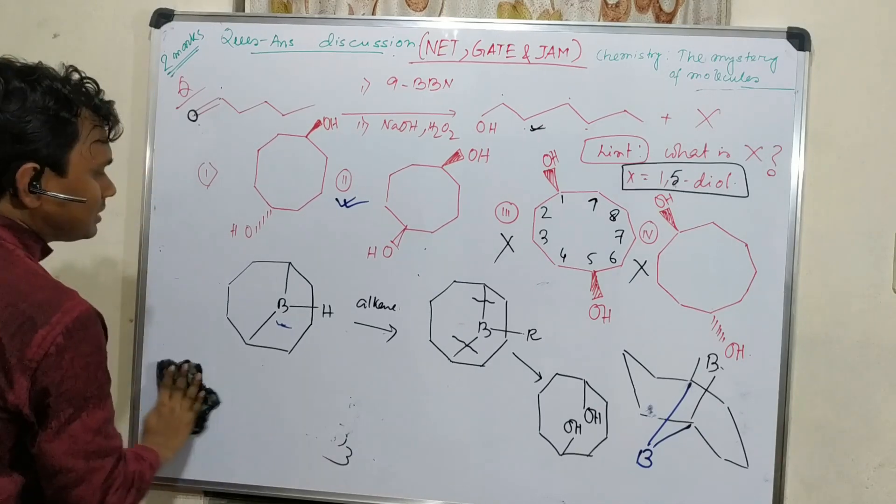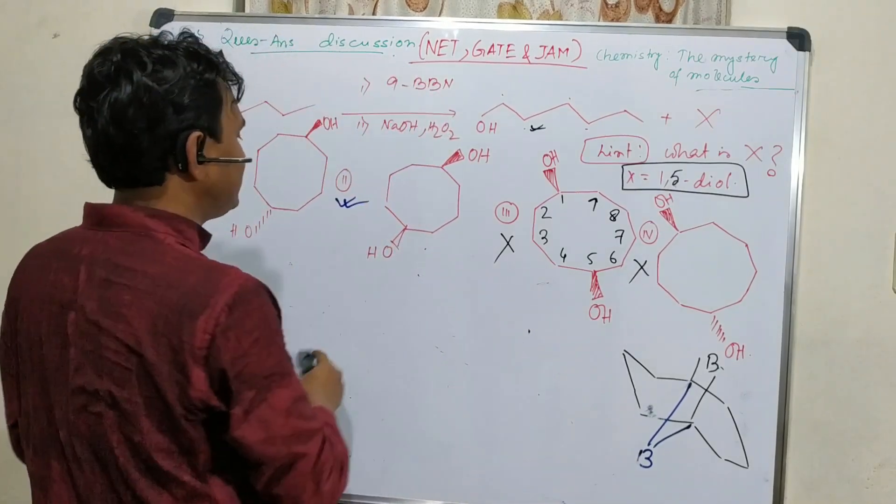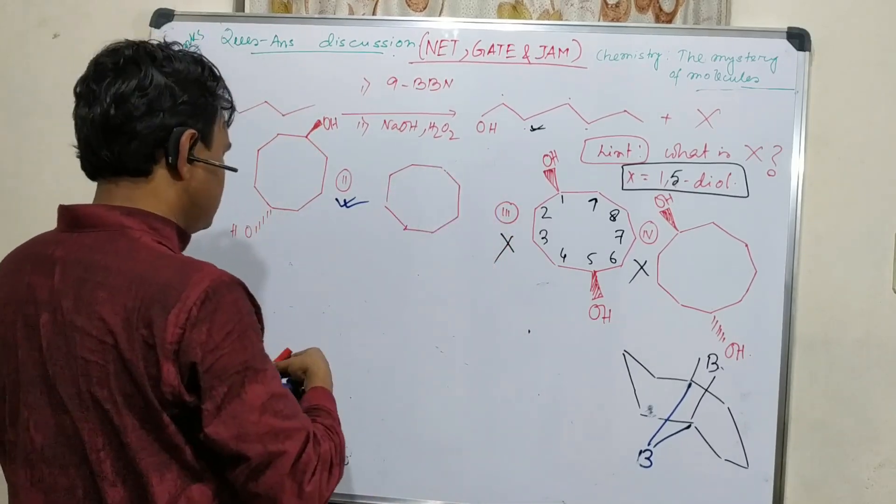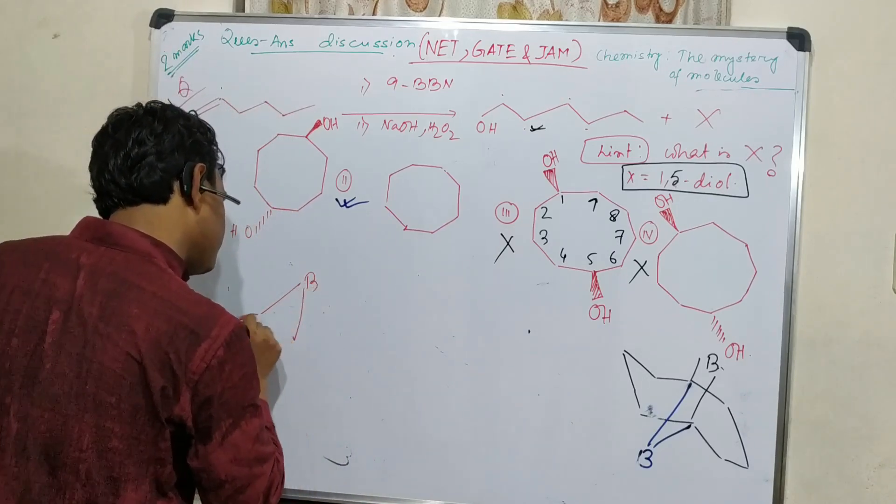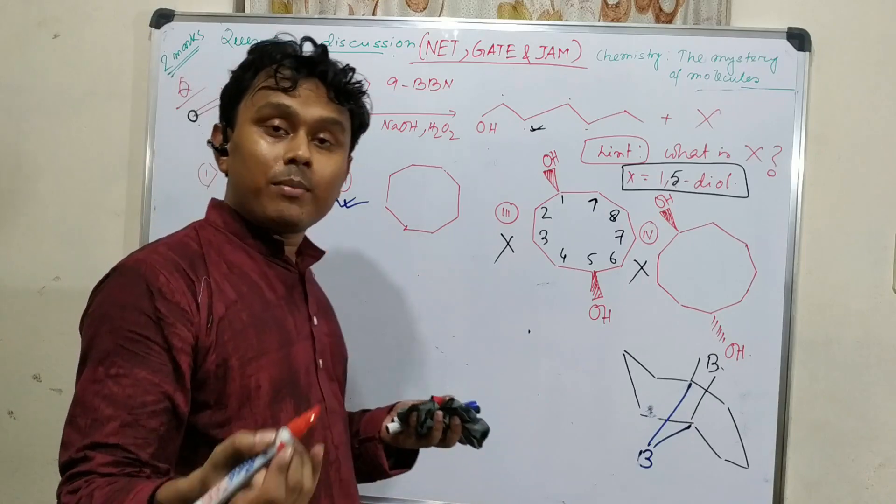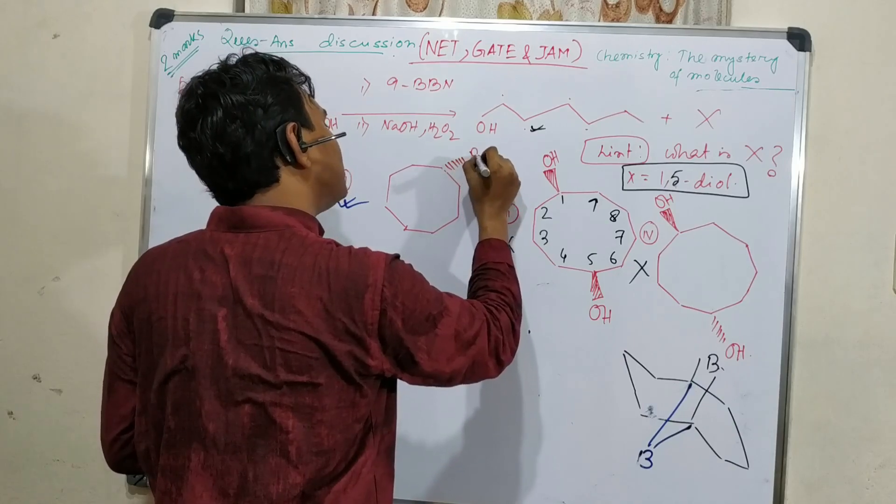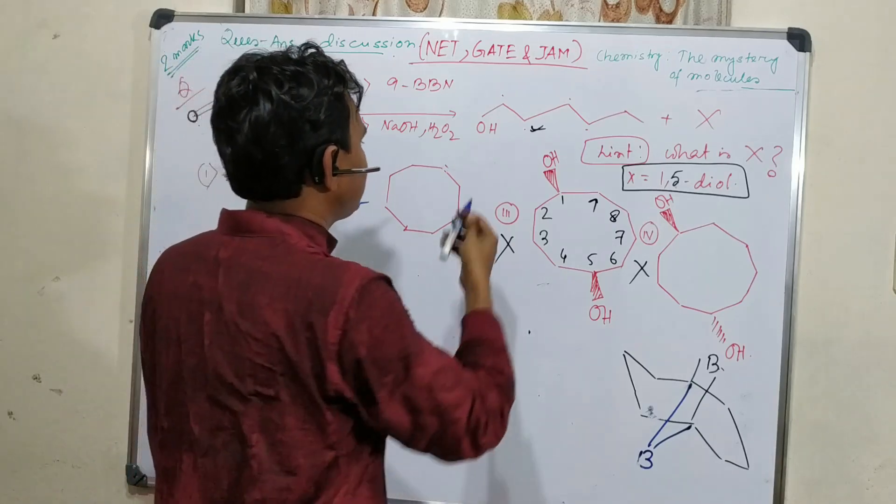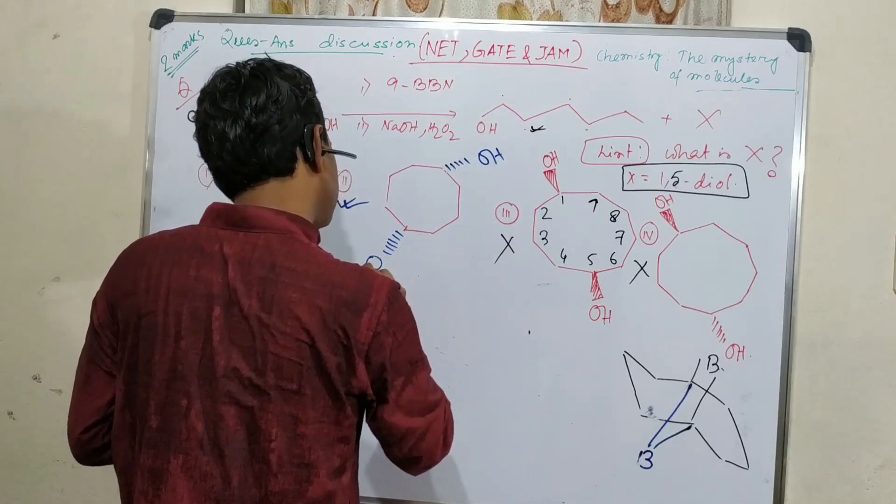What other thing may happen? For example, the examiner may do some clever thing with you. The examiner could, instead of giving two things upside, because always in books 9-BBN is presented with boron above this view, so it's expected that alcohol will be above generally. But if the examiner gives boron down, the examiner can make a clever choice. For example, this is down and this is down.